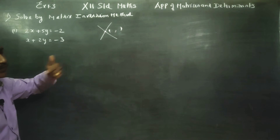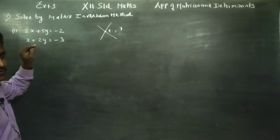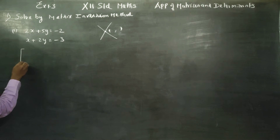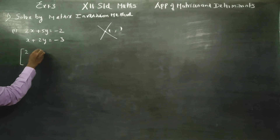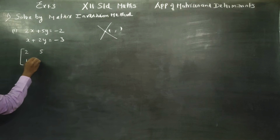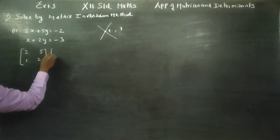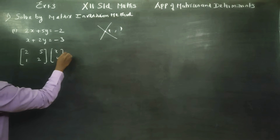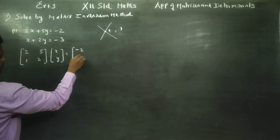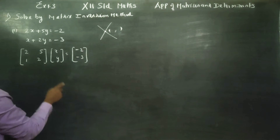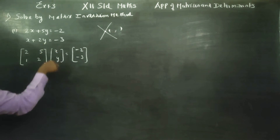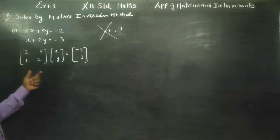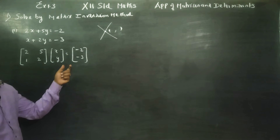We will use matrices. The first step is to write in matrix style. The coefficient matrix is [2, 5; 1, 2], the variable matrix is [x; y], and the constant matrix is [-2; -3]. This is matrix style — each row times column. Change this into matrix form.